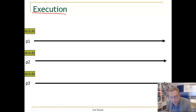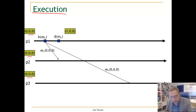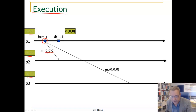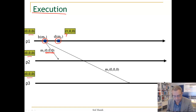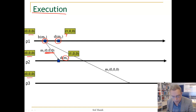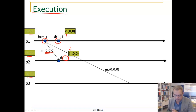Let us see an execution scenario. Here are the initial vector clocks at each process. The green vector clock is the one associated with each process. We have a broadcast of message M1 from P1. With this message, we have a vector saying we have seen nothing — no preceding message from any process. M1 is delivered at P1, and we increment the local vector clock to reflect this. The same happens at another process: we deliver M1, and since there are no causally preceding messages, we increment the field for P1.